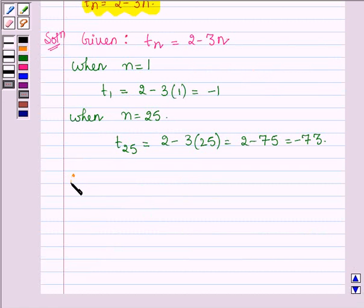Therefore, the first term of the AP is -1 and the 25th term is -73.